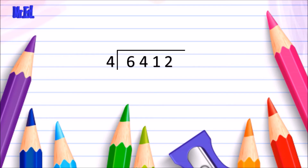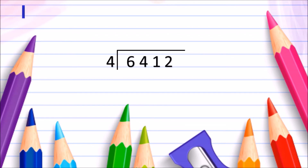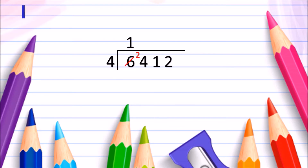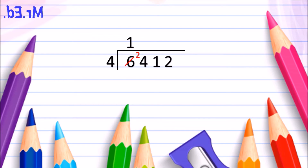Let's look at how many times 4 goes into 6. Using our 4 times table, 4 goes into 6 once, but it leaves 2 left over. So in our quotient area we write our 1, and we cross out our 6. The 2 left over we carry over in between our 6 digit and our 4 digit — this makes the next number 24. Now we find out how many times 4 goes into 24. Using our 4 times table: 4, 8, 12, 16, 20, 24 — 4 goes into 24 six times.